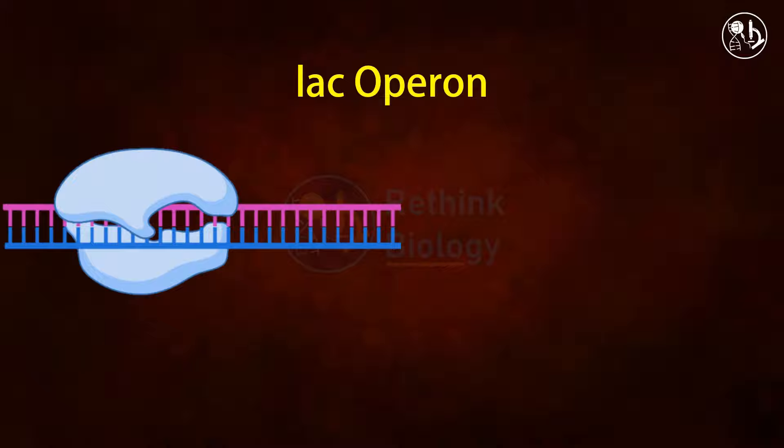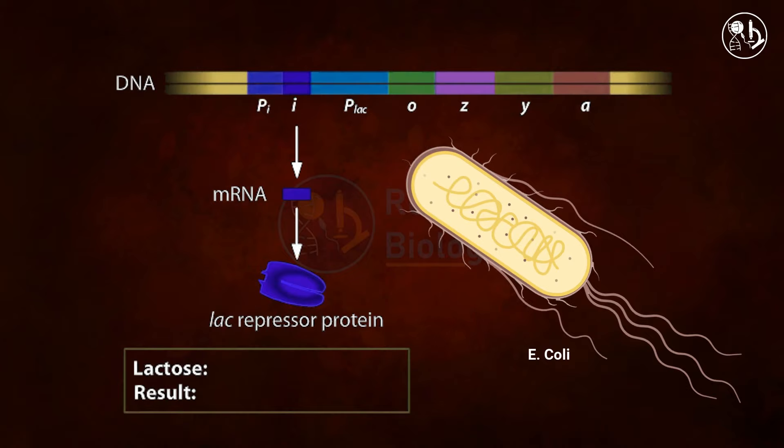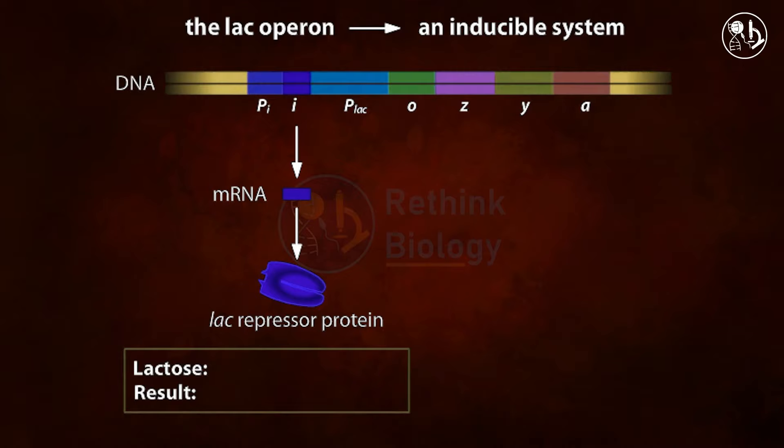Hello everyone, today we are going to learn about the lactose operon, or lac operon. The bacterium E. coli possesses a highly effective lactose metabolism process. The lac operon is a single expressible unit of DNA that encodes three proteins crucial in lactose metabolism.